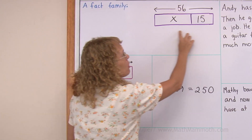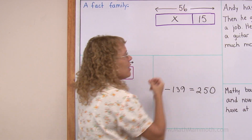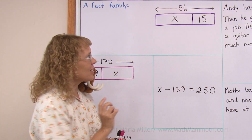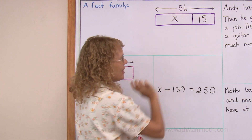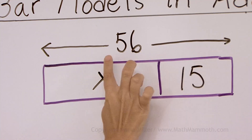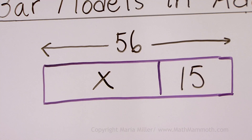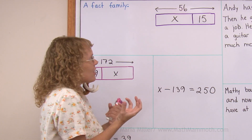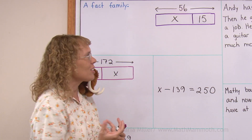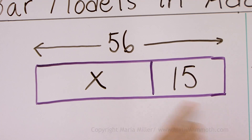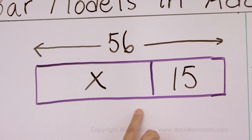Here I have a bar model. Think of it as a long board that is cut into two pieces. The total length of the board is 56 — 56 of some units, like 56 centimeters or inches. One part is 15 units and this is our unknown part, marked with x.